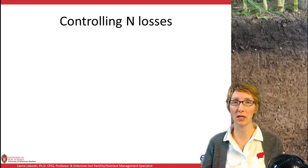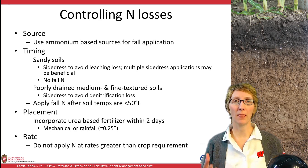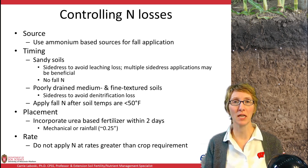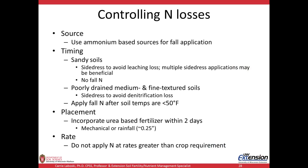That gets me on to controlling N losses. If we think about source of nitrogen and we want to control losses — for fall applications, which may not be the best thing in Wisconsin because we can't always control the amount of rainfall through late fall, winter, and early spring — we would want to use ammonium-based forms of N or anhydrous ammonia, because you have to convert from ammonium to nitrate, and nitrate is what can be lost.